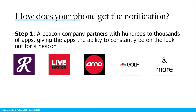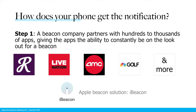Some examples of apps that partner with beacon technology companies are Live Nation, AMC, NBC Golf, and plenty of other ones. Apple actually has iBeacon as well, which allows beacon technology companies to serve messages to iPhone users should they have beacon technology notifications turned on. So you have to have one of these apps that has to be active and you have to have notifications turned on in order to get a message.